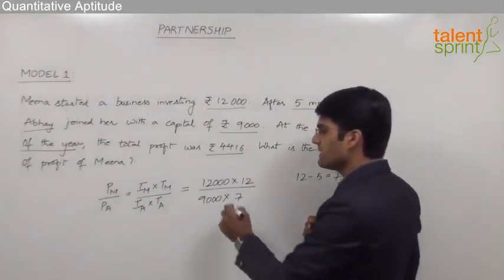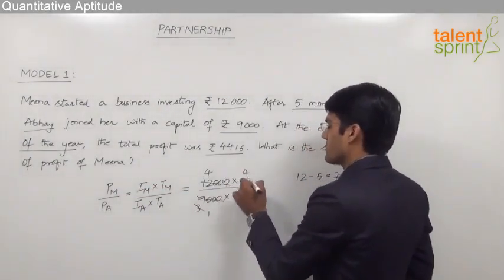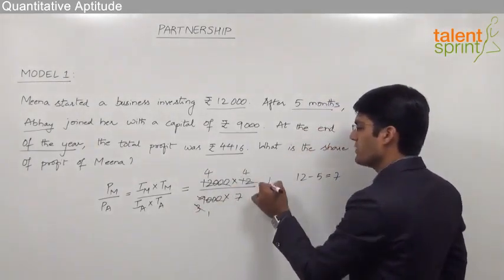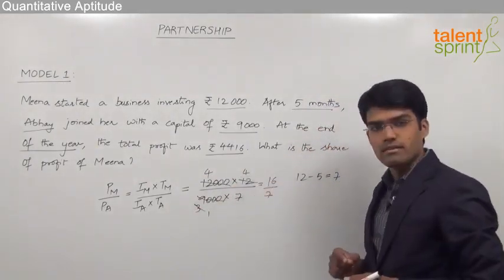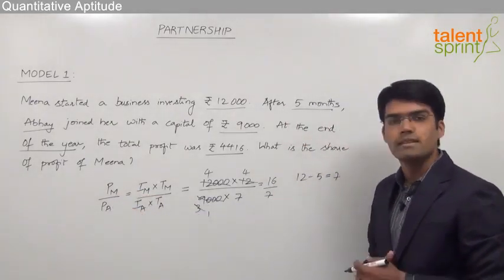By simplifying this we get 3 into 3, 3 into 4 and again 3 1s and 3 4s. This ratio can be taken as 4 into 4, 16 by 7. Very clearly the profit of Meena to profit of Abhay is in the ratio 16 is to 7.